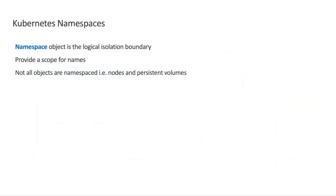We are going to use Kubernetes namespaces as our logical isolation boundary. Kubernetes namespaces is an object that allows you to create a virtual cluster within your cluster. Namespaces provide scope for names, so you can use the same name for objects like pods or services across different namespaces. We also need to be aware that not everything is namespaced — for example, nodes are not namespaced as of the recording of this session.